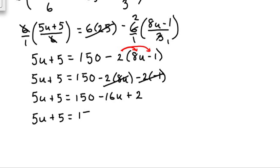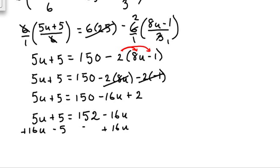We want to move all the variables to one side and all the numbers to the other side. So we'll move all variables to the left and all numbers to the right. To do that, we add 16u to both sides of the equation, and at the same time we subtract 5 from both sides.